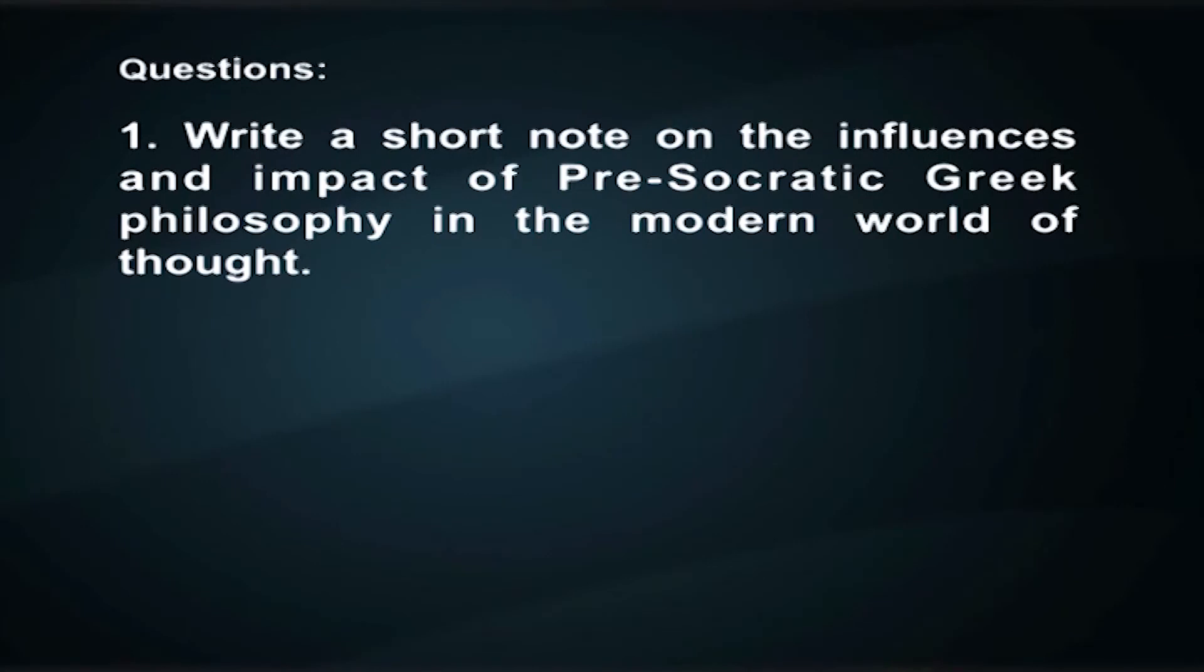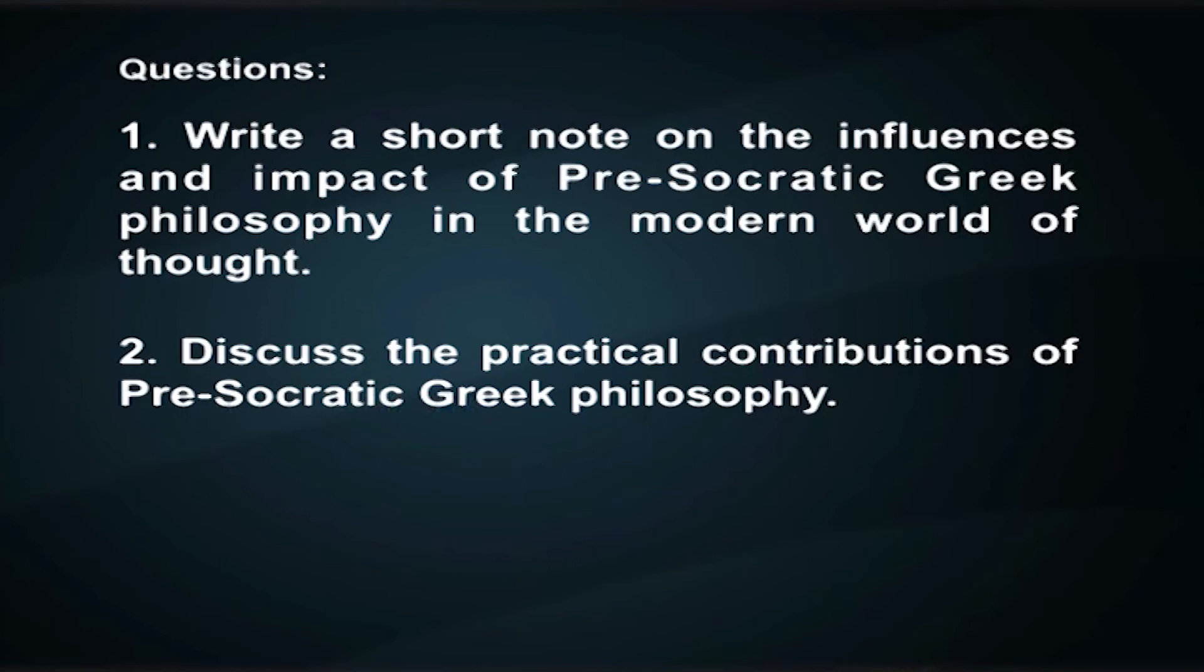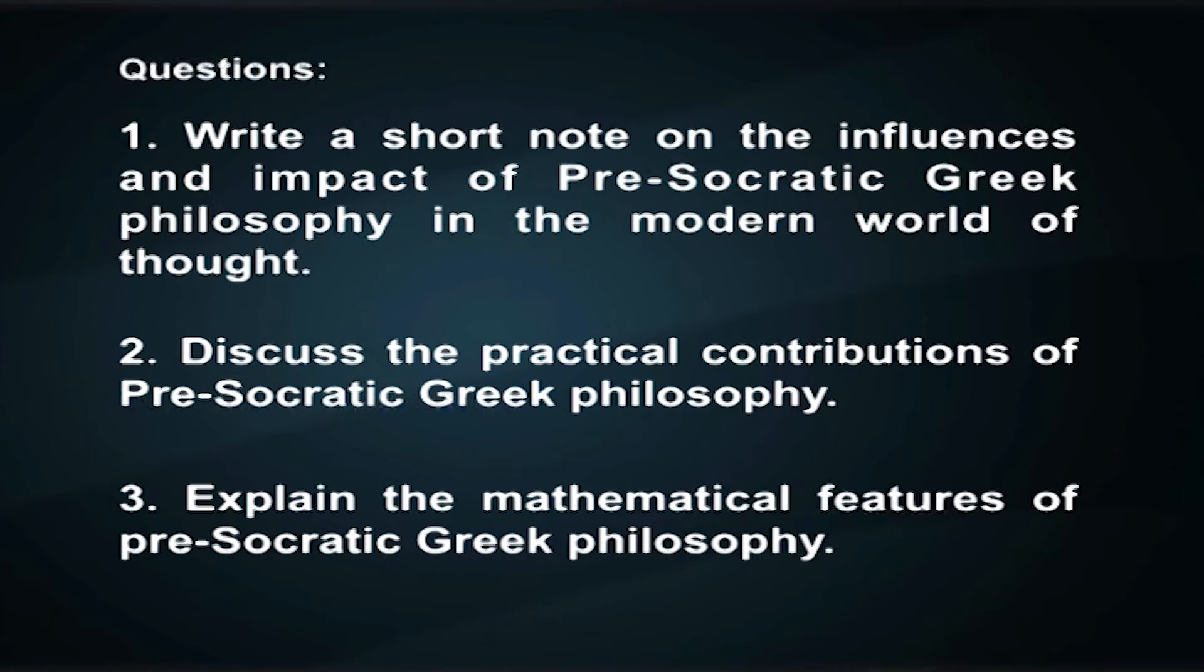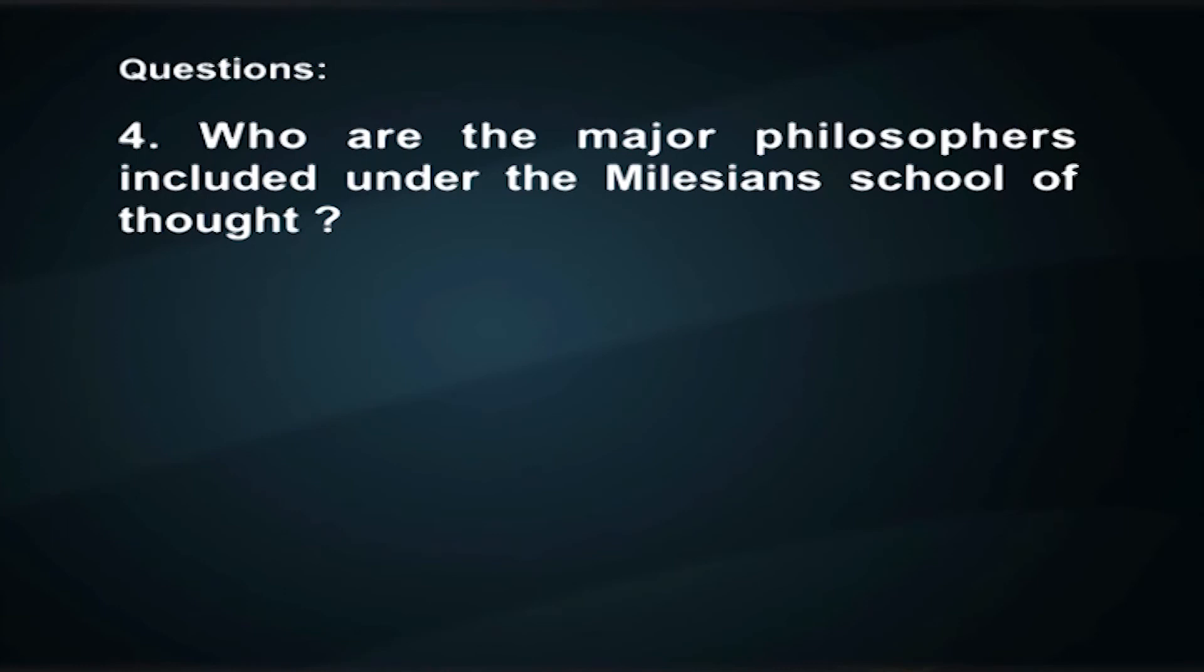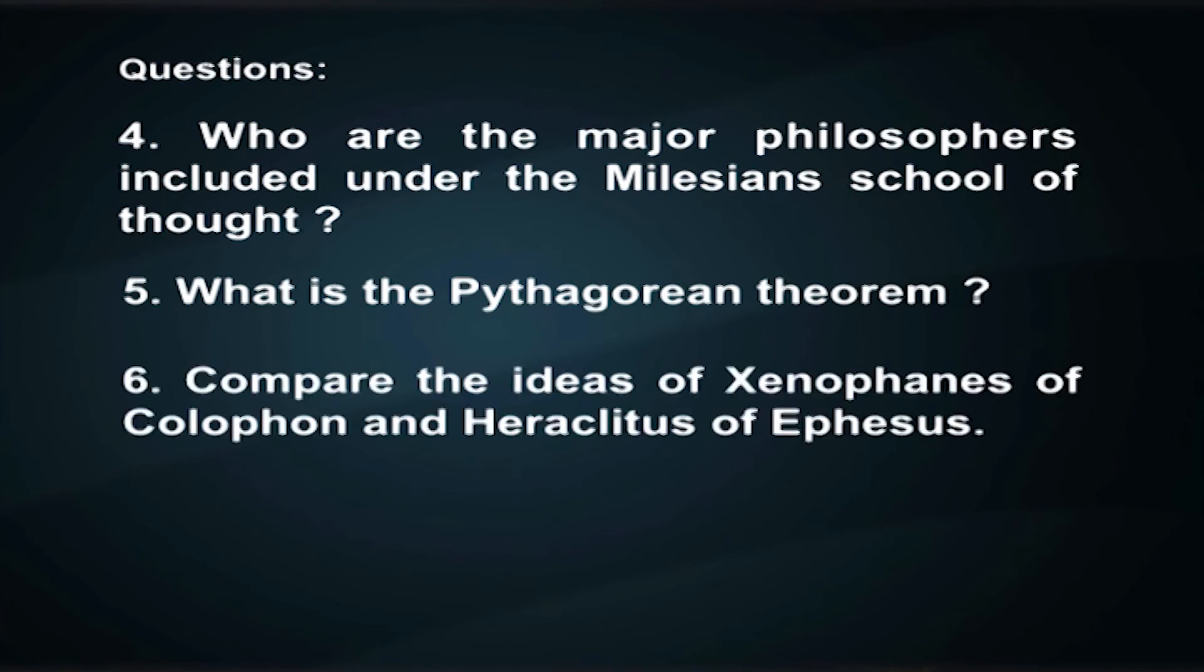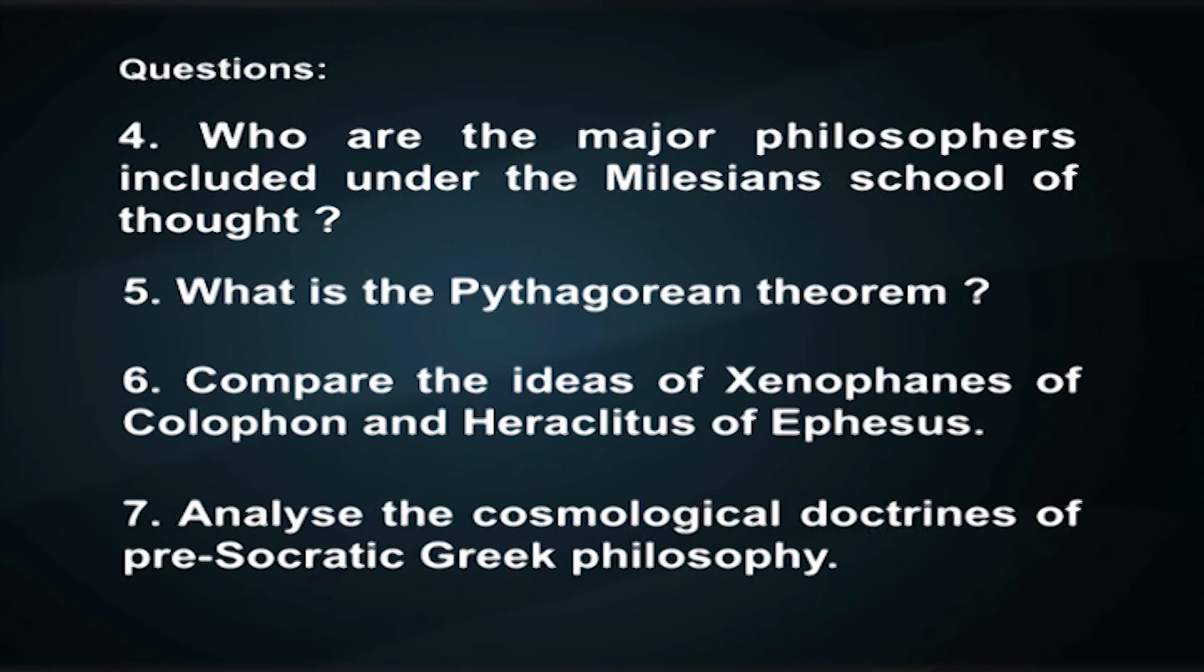Write a short note on the influences and impact of Pre-Socratic Greek philosophy in the modern world of thought. Discuss the practical contributions of Pre-Socratic Greek philosophy. Explain the mathematical features of Pre-Socratic Greek philosophy. Who are the major philosophers included under the Milesian school of thought? What is the Pythagorean theorem? Compare the ideas of Xenophanes of Colophon and Heraclitus of Ephesus. Analyze the cosmological doctrines of Pre-Socratic Greek philosophy.